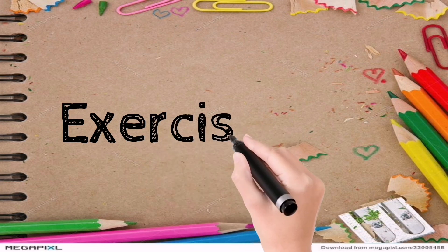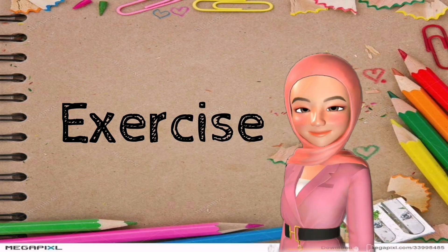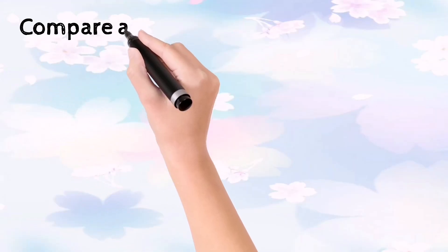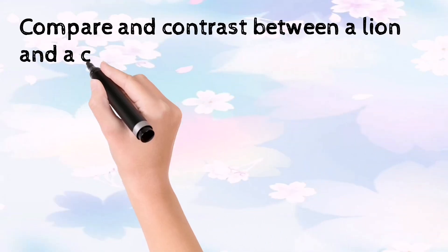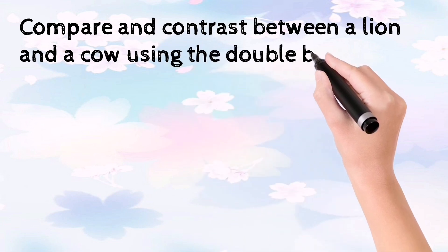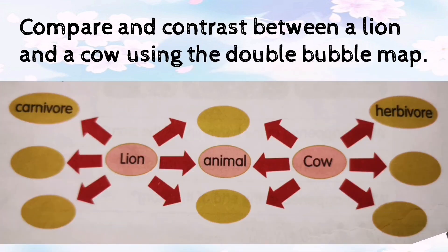Let's exercise. Compare and contrast between a lion and a cow using the double bubble map. I would like you to draw this double bubble map in your exercise book, and then compare and contrast between a lion and a cow. Have a nice day.